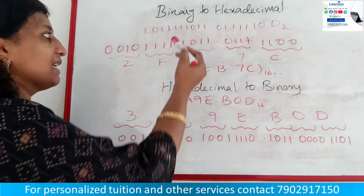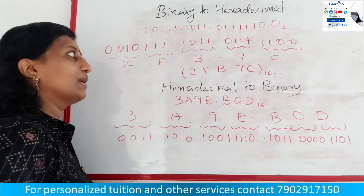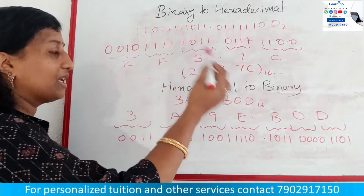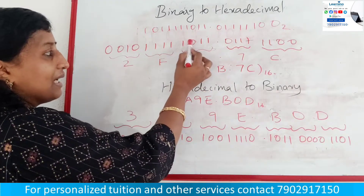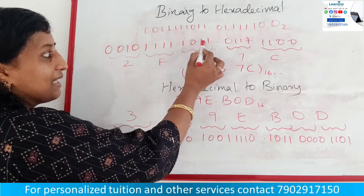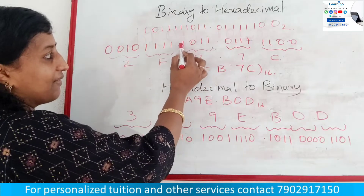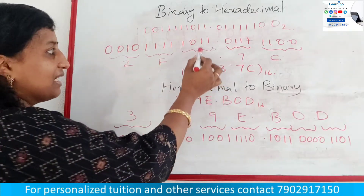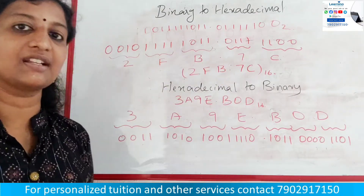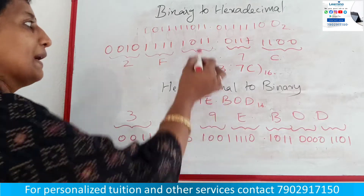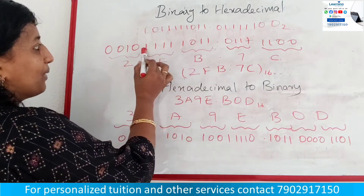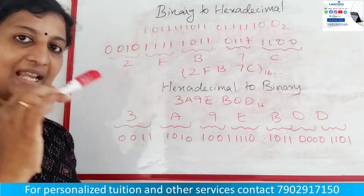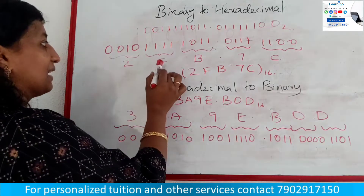We can see the corresponding value. We have 0011, which gives us value 3. Now we have the next group, which we call B. This is the corresponding value — this is the value of B.